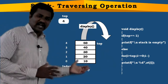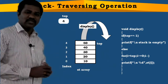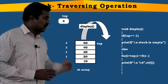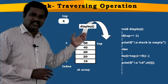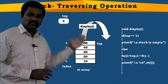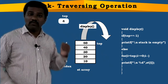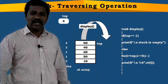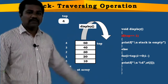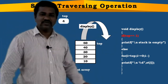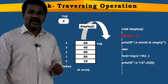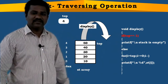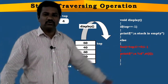Let us assume this stack data structure consists of 5 elements: 10, 20, 30, 40, 50, and we are going to perform the display operation. The top value is 4, which is pointing to the topmost element. We check the condition: top equals minus one — the condition is false, so it does not execute the empty branch; it goes to the else part and executes the for loop.